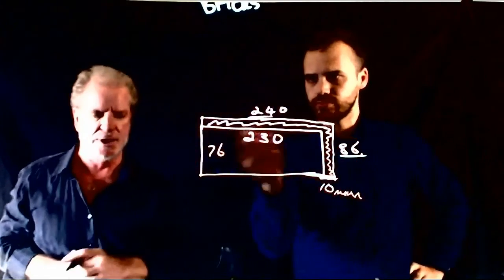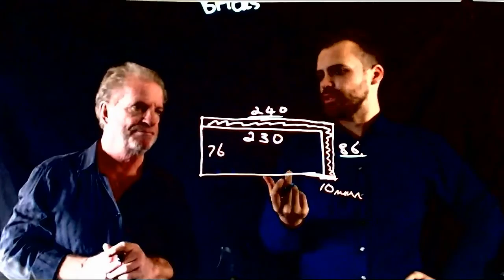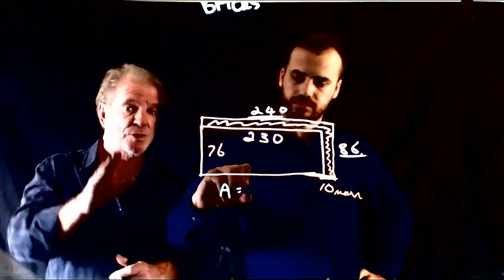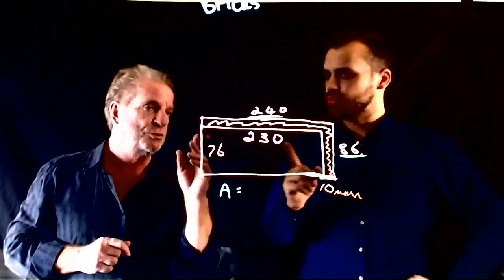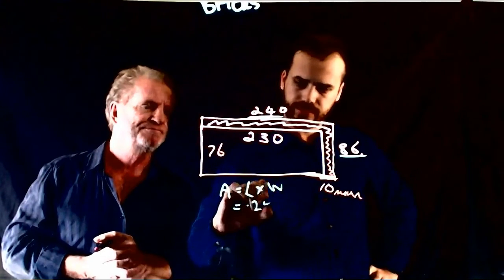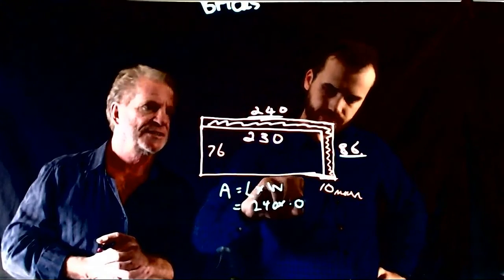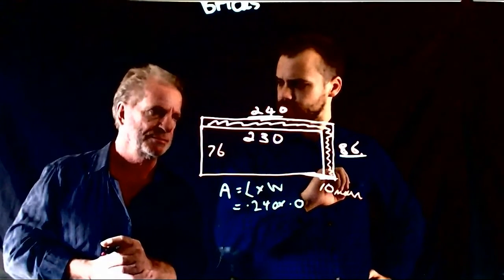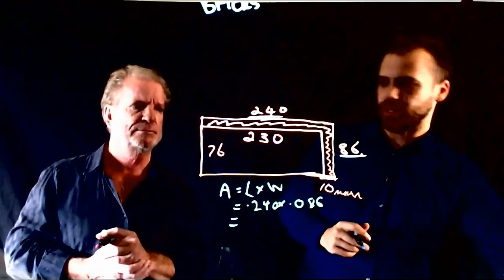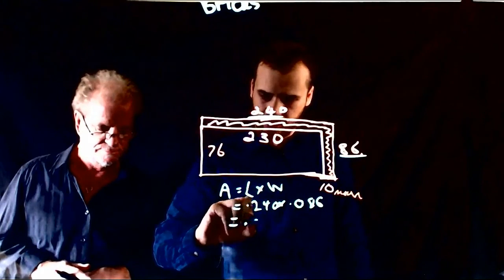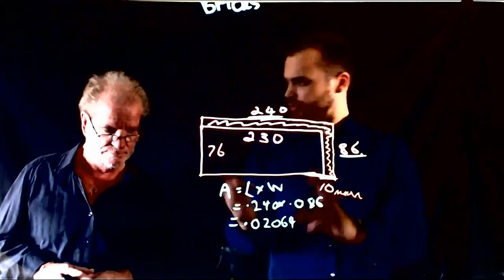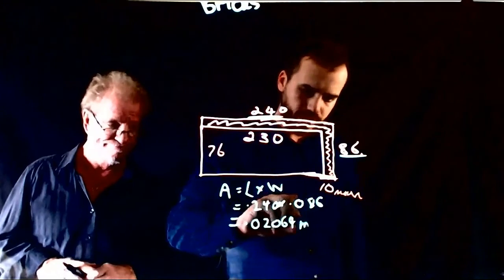And those dimensions we'll use to calculate the effective area of one brick. I reckon these guys should be able to figure out the area of one brick easily. In square metres — you'll need to change these to metres by dividing by a thousand. So it'll be 0.240 multiplied by 0.086. I've typed that into my calculator and I get 0.02064. That's the area of the brick in metres squared, or square metres.